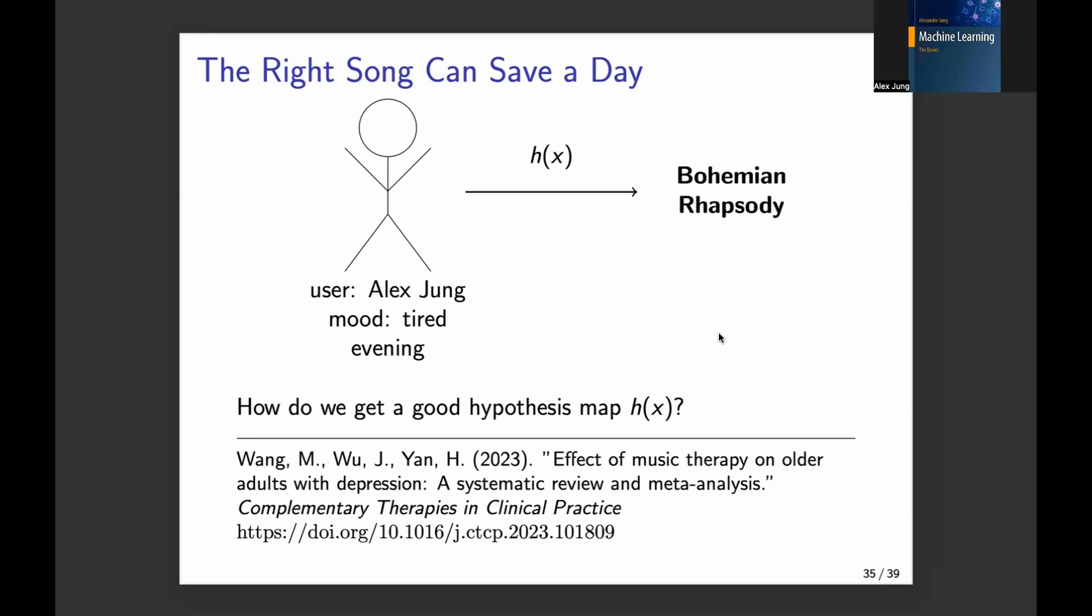You want to learn for a data point, which is a specific user, like me in this case, and you have certain features. So the mood, tired, you have the daytime, it's currently evening. So what should you play to lift the mood of this user?